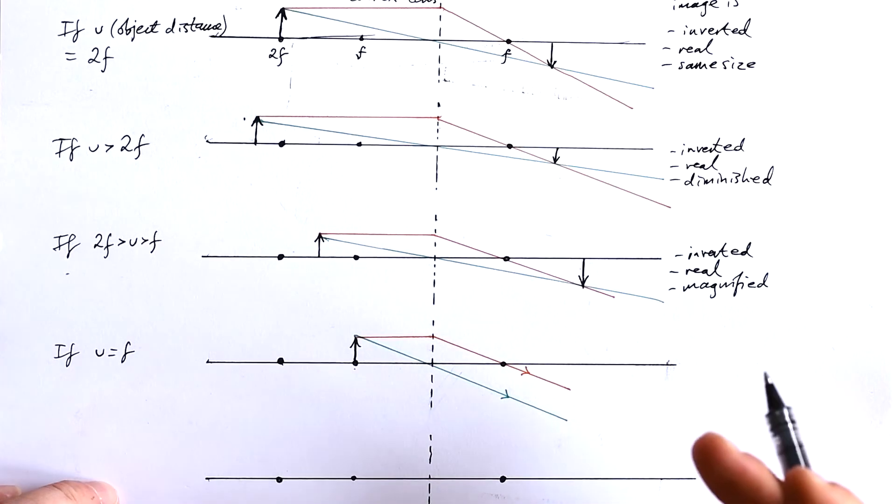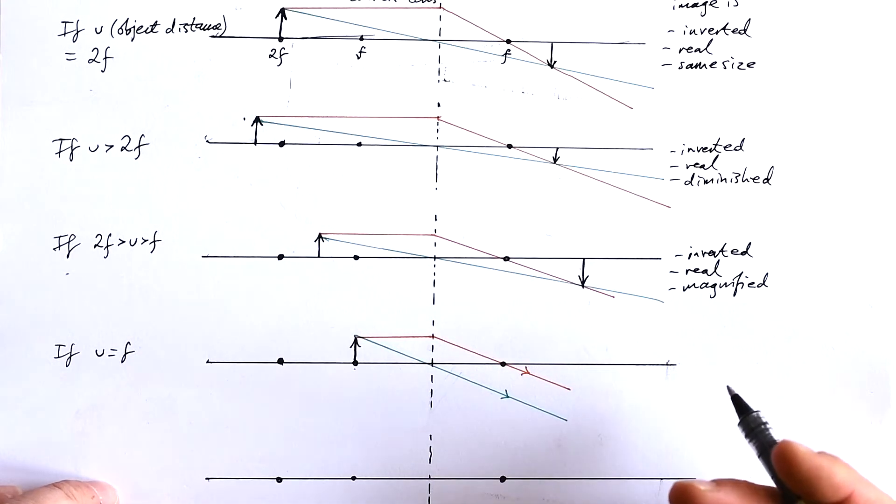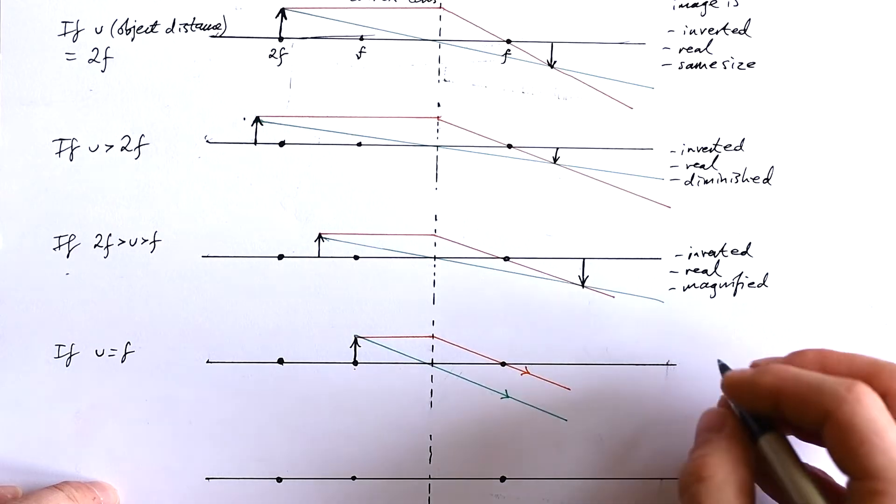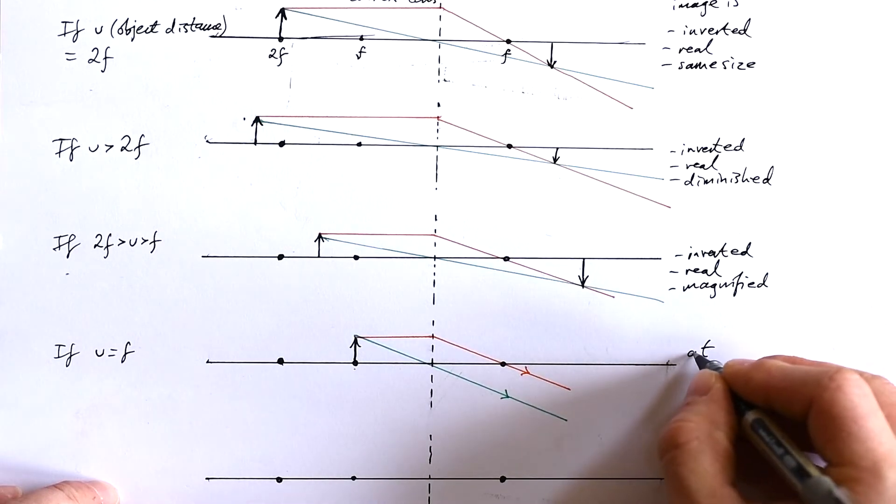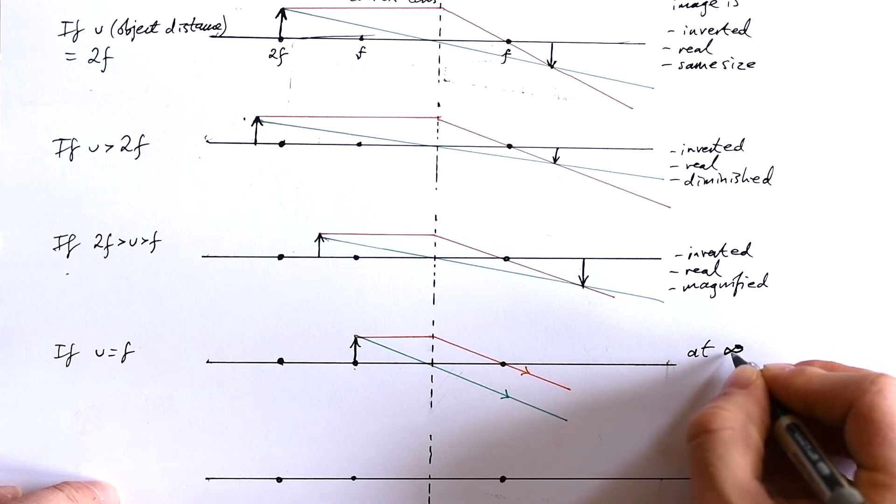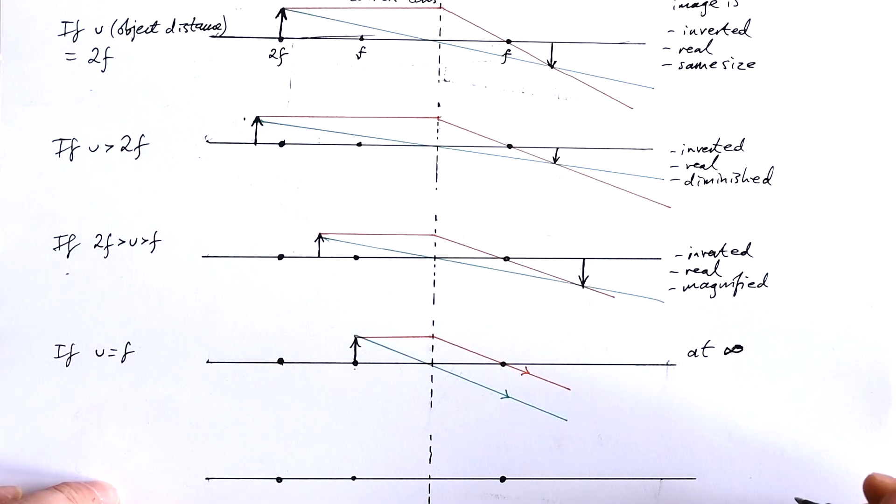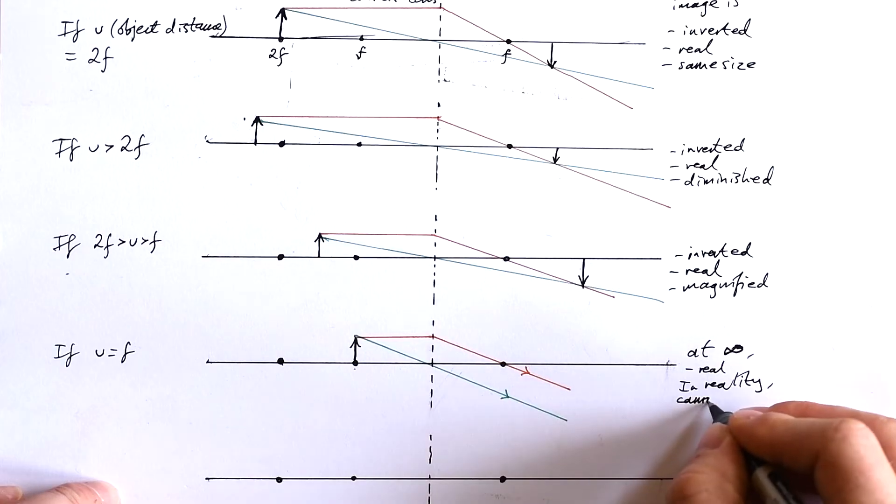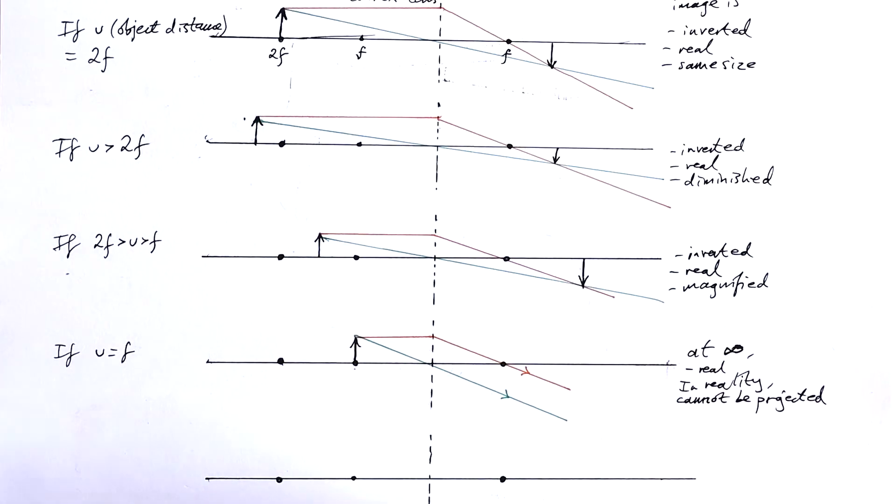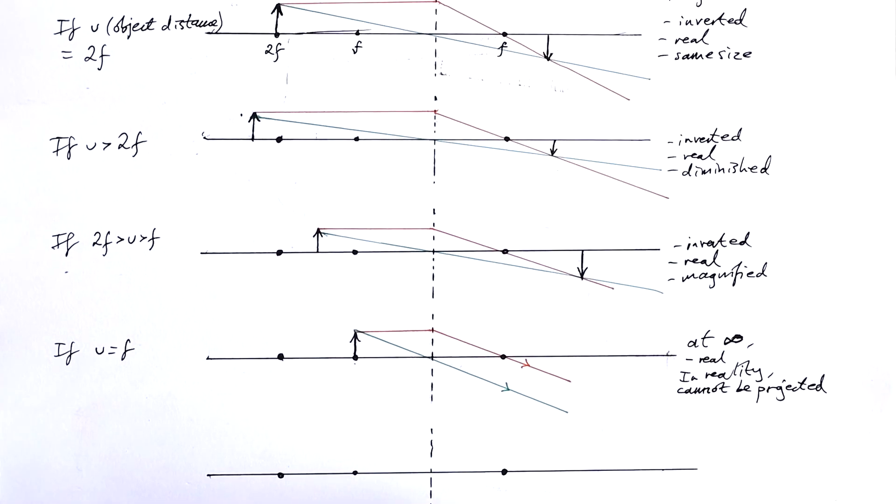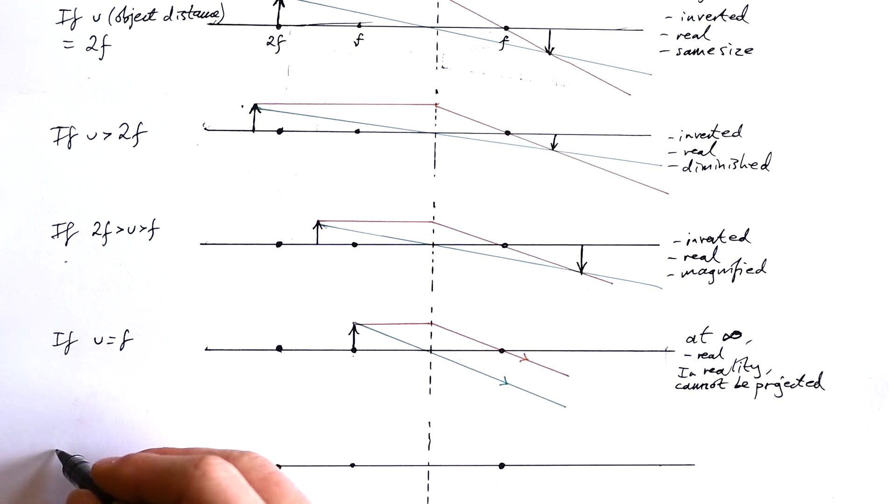If these light rays never converge, where would we put the screen for this image to be projected? It would have to be at infinity. Of course, we can never actually get to infinity, so this is one of those situations where that's just the theory. In reality, this cannot be projected. This is the tipping point - where everything starts to change. Let's go a little closer.